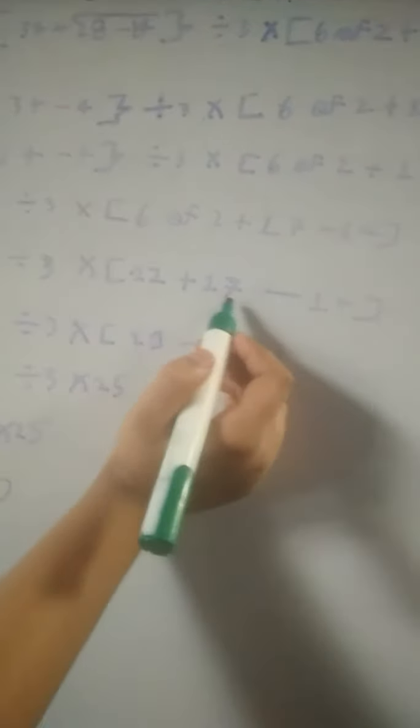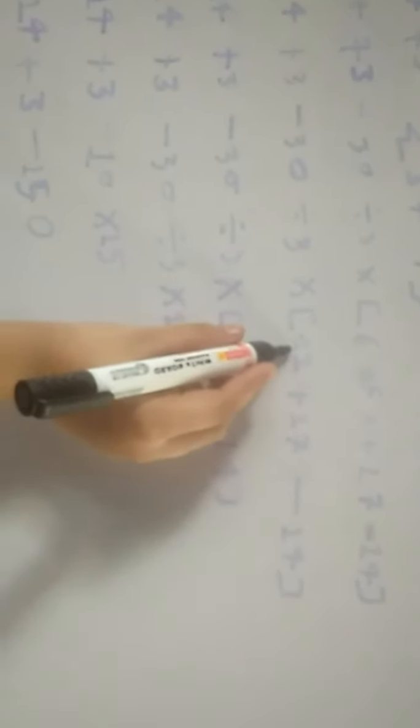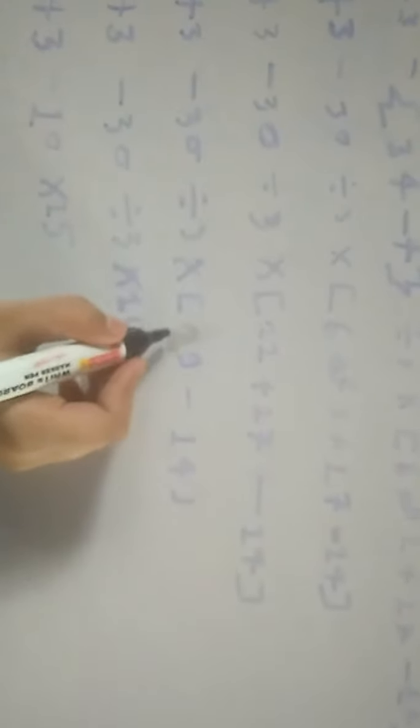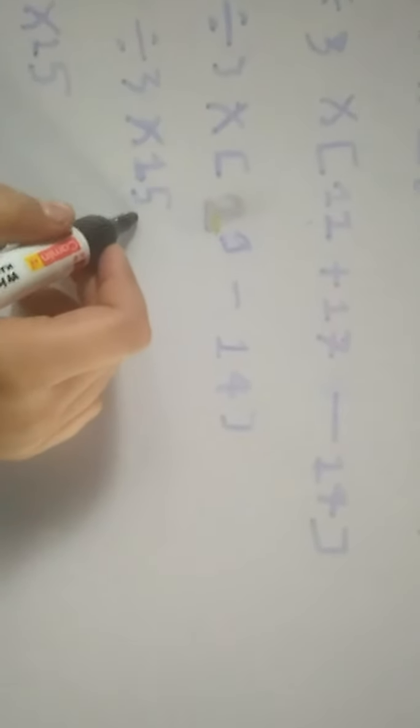Then we will solve the next part. If we have solved the curly bracket first, our answer will be 12. Moving on, our next answer will be 29. Now we can see that our big bracket is now resolved. If we subtract, our answer will be 15.